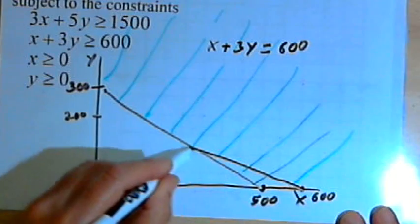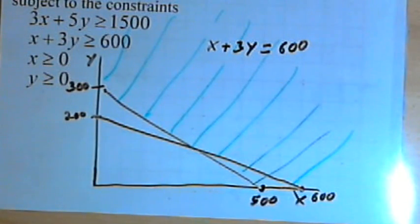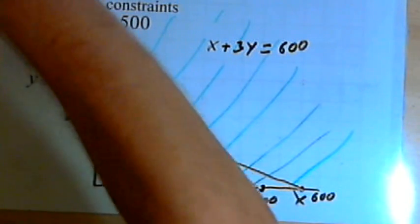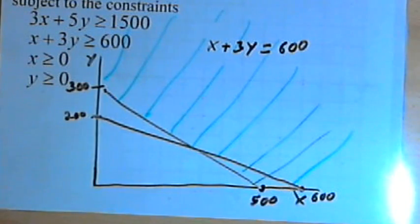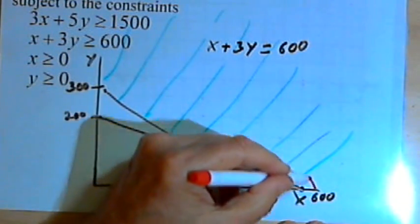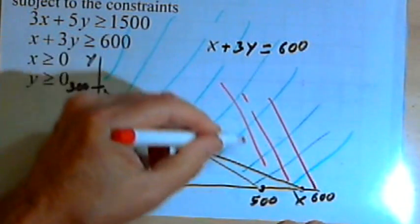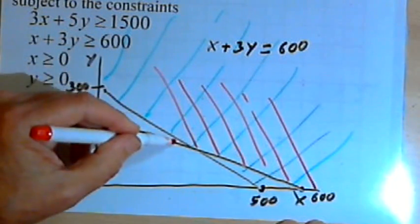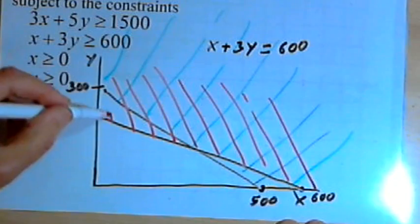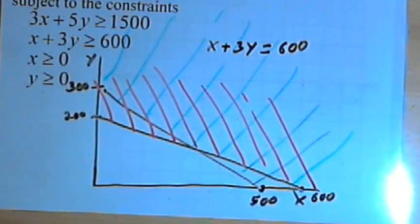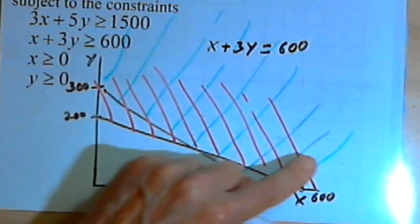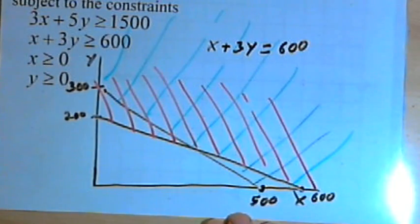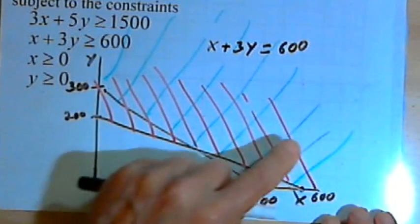I'll connect those two intercepts and I'll shade the area above that line. Now I've got my feasible region. It's the area above both of the lines where the shading areas overlap.